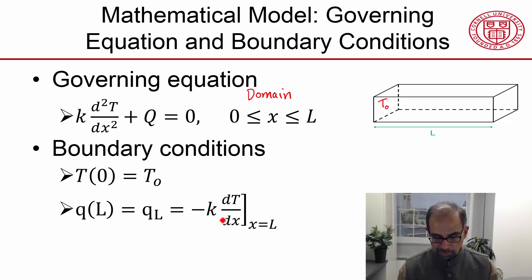And at the right face, we have the heat flow per unit area. That's a heat flow per unit area. So that's the boundary condition at the right face. And we know that value.